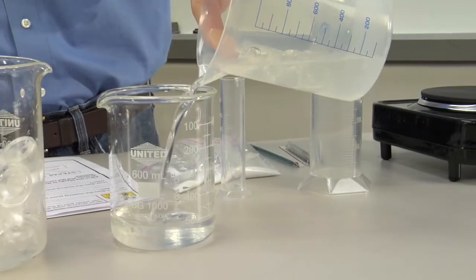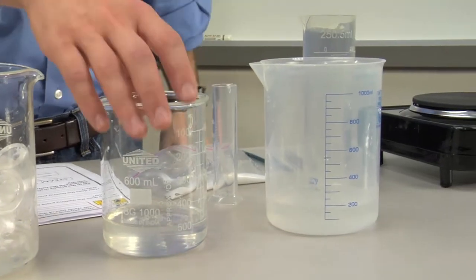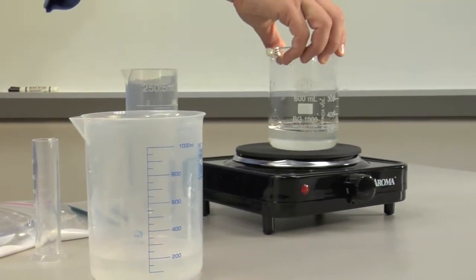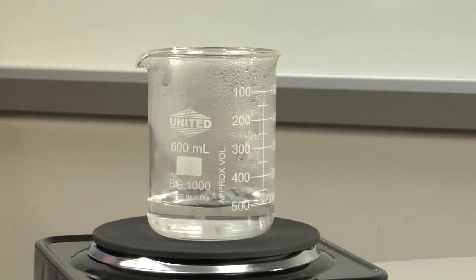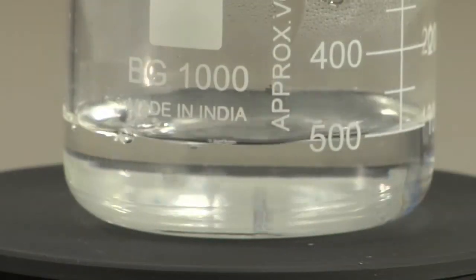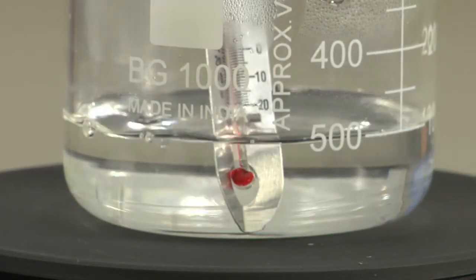Next, pour 200 milliliters of salt water into a beaker. Place the beaker on the hot plate and heat. At the boiling point, record the temperature of the beaker's contents.